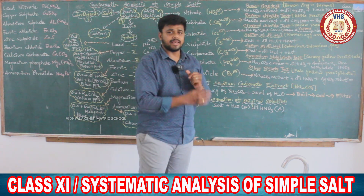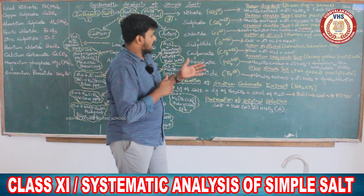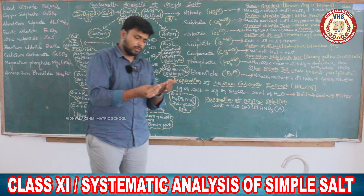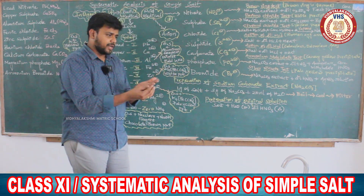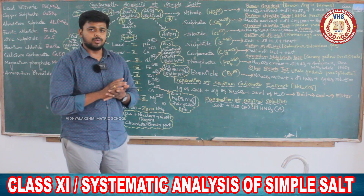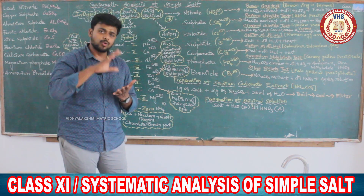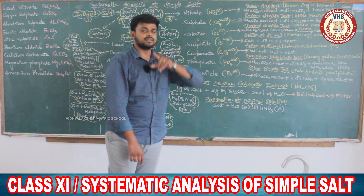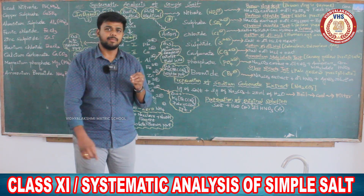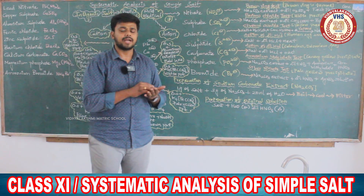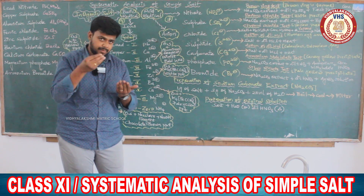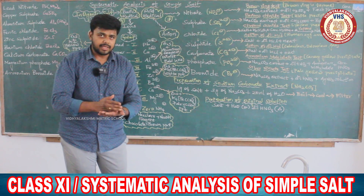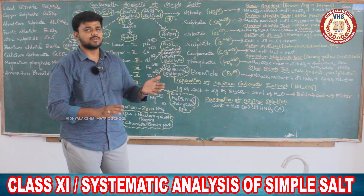Sodium carbonate extract — that's what we call the original solution. For preparation of sodium carbonate extract: you add 1 gram of salt, then 3 times the amount of sodium carbonate, then 20 ml of water. You boil it, then cool it and filter it. The clear solution obtained is the sodium carbonate extract.